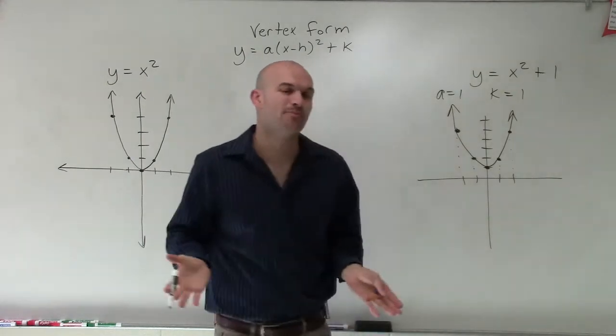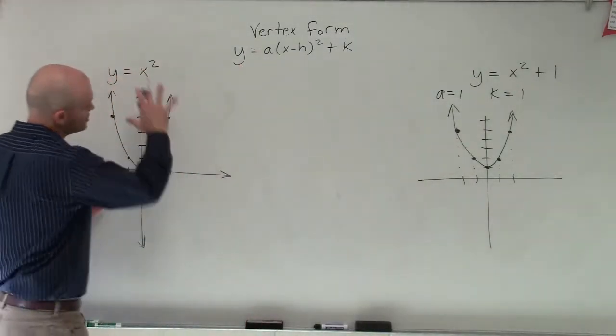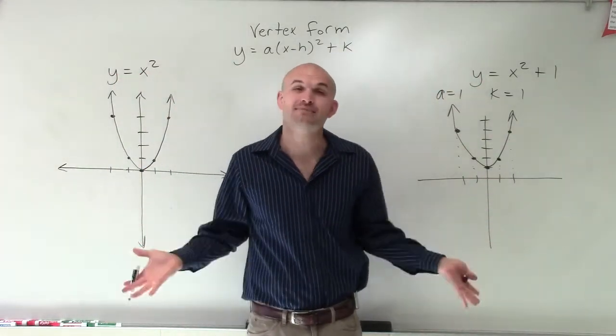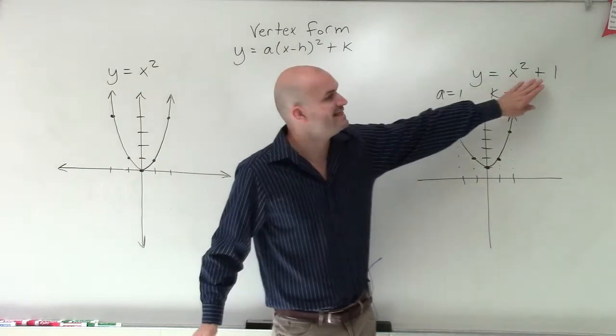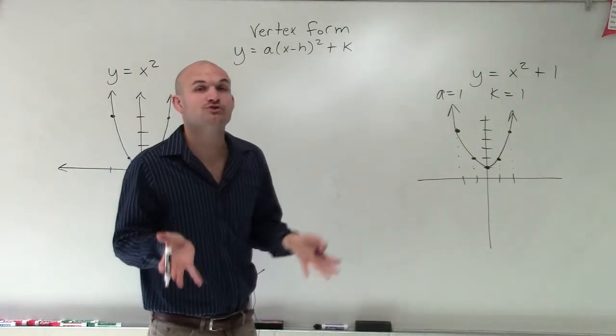And you can also test it out by plugging in points if you wanted to. But now you can see that the relationship between my parent graph and this graph is going to be the whole graph is exactly the same, except it's just been shifted up 1. And that is the case because my k equals 1, and that's going to shift the graph up.